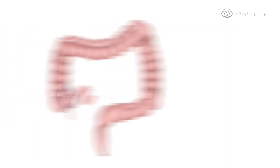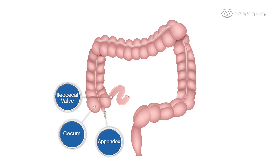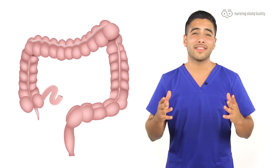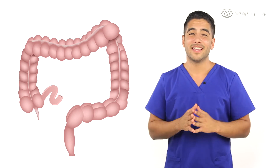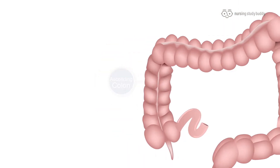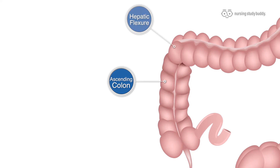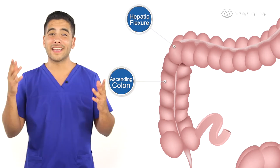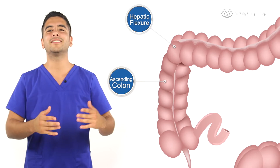All right, I know that was a lot, so let me bring it back. We have the ileocecal valve, which is the entrance. Next we have the cecum, and then we have the appendix — you've probably heard a lot about the appendix; it's not really that important, and sometimes they even cut it out. Then we have the ascending colon, which makes it to our hepatic flexure.